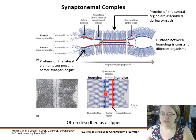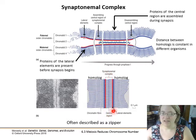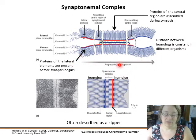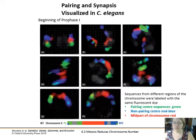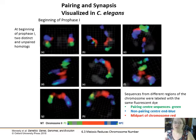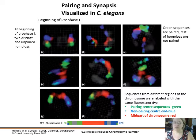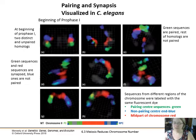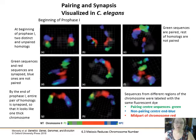In the synaptonemal complex you have the two homologs — one on each side — and a central region. There are many proteins helping these align and create the pairing, which ensures crossovers occur in the right places. In C. elegans, a nematode, people have been studying this formation. At the beginning the two homologs are distinct and unpaired, but over time they start to synapse together. Eventually the entire pair of homologs is synapsed and looks like one thick chromosome — they're that close together.